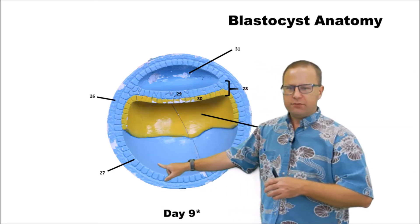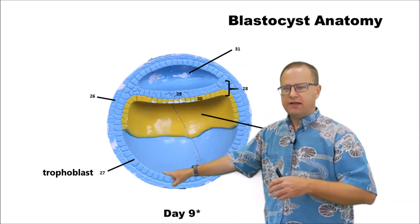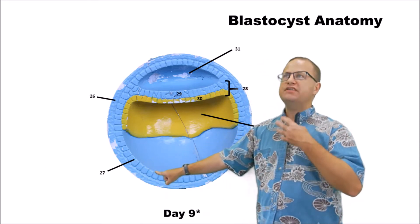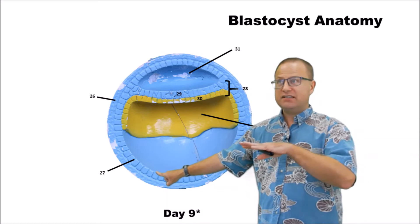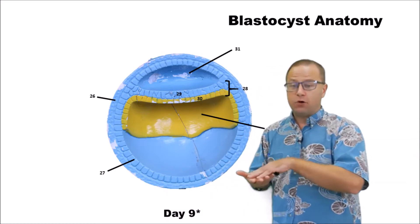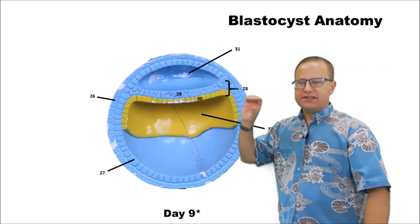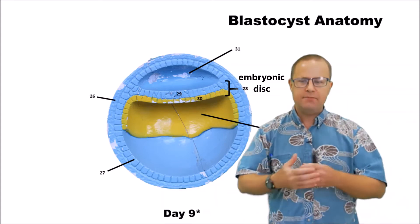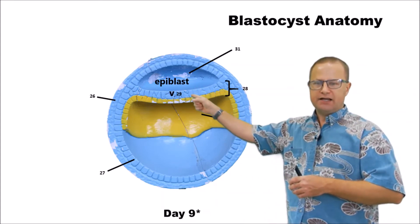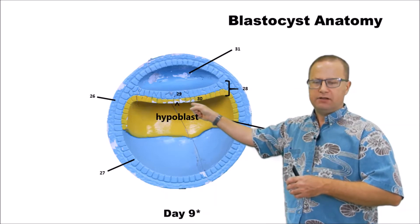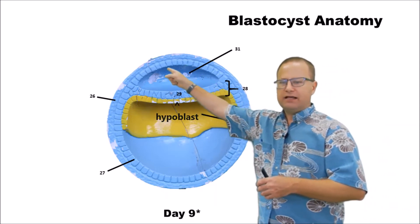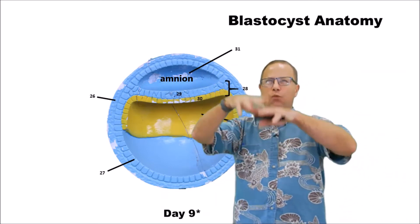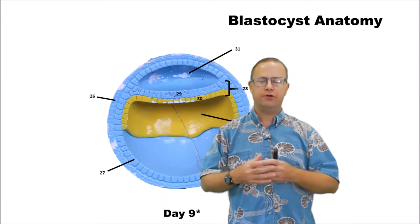Underneath the zona pellucida we have that ring of cells called the trophoblast. Remember, tropho means to feed, so the trophoblast is eventually going to become the chorion, which is the embryo's portion of the placenta — an organ of exchange of nutrients. Other structures we can see here include the embryonic disc, which goes on to become the embryo. It has two parts: the epiblast up top and the hypoblast down below. Above the epiblast we can see a sac called the amnion or amniotic cavity.